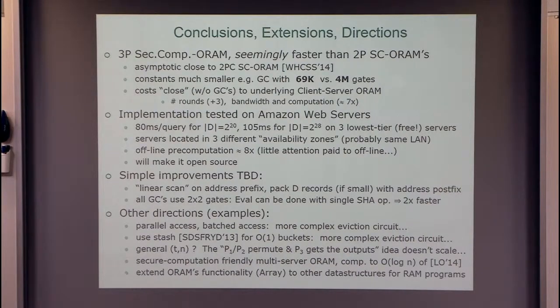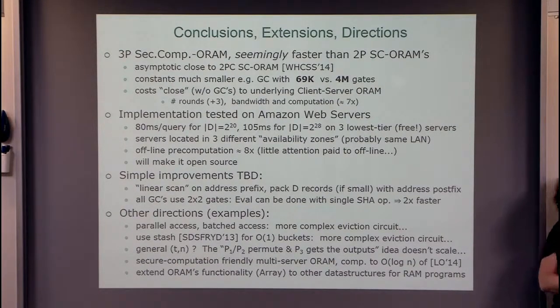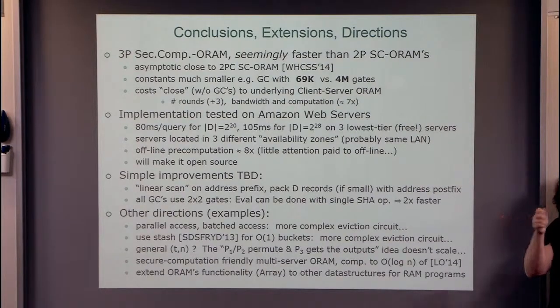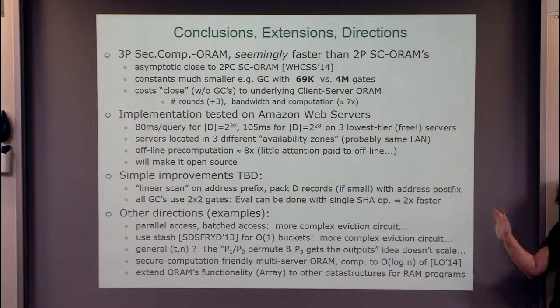So the point is that they did three-party secure computation for ORAM, seemingly faster than two-party, faster than what we know so far. One thing I forgot to say about performance is that their performance ends up very close to the original ORAM, the tree-based ORAM performance. Adding the secure computation doesn't cost much at all. They have an implementation which they will make open source. They have simple improvements that will reduce this, they think it will be three times faster. There's a bunch of open problems of how to do things better and faster. That's it. Thanks.